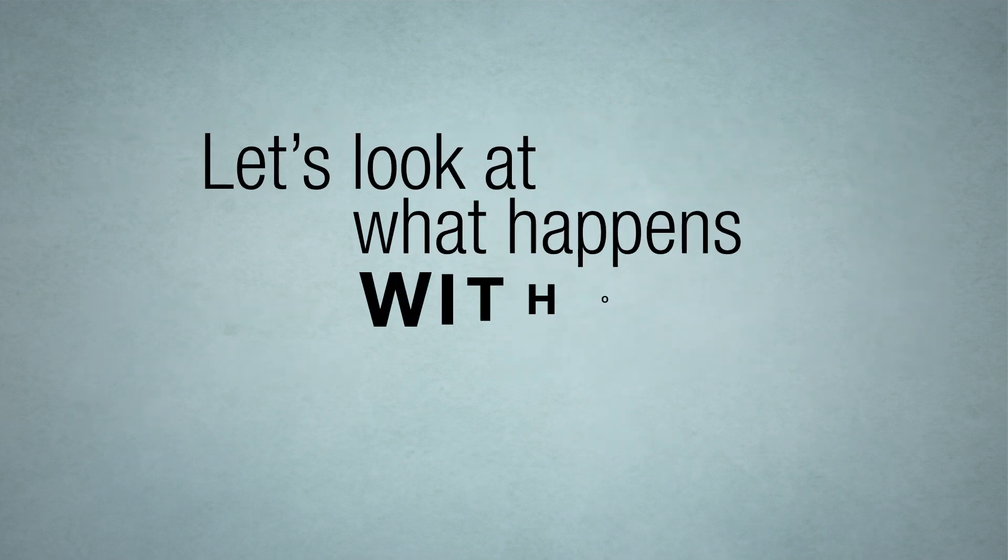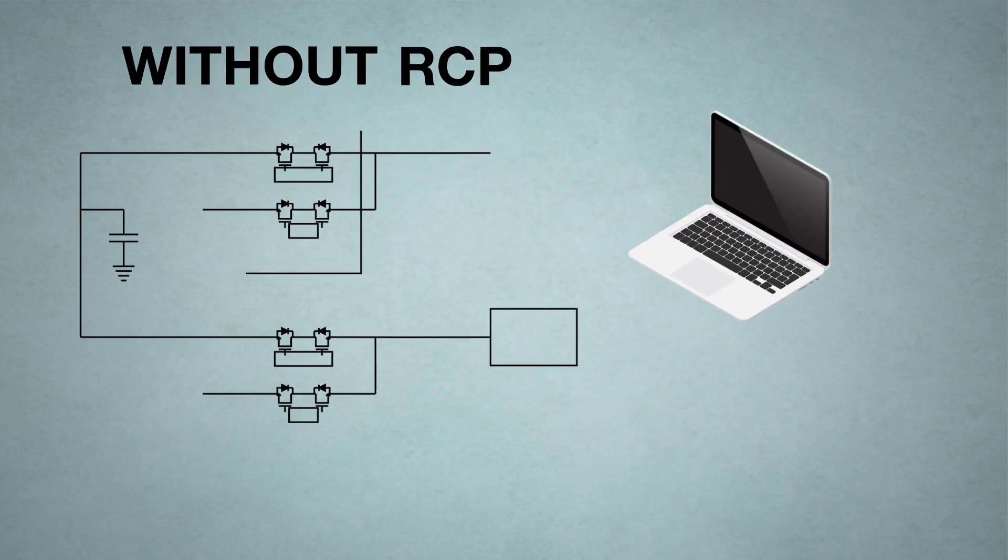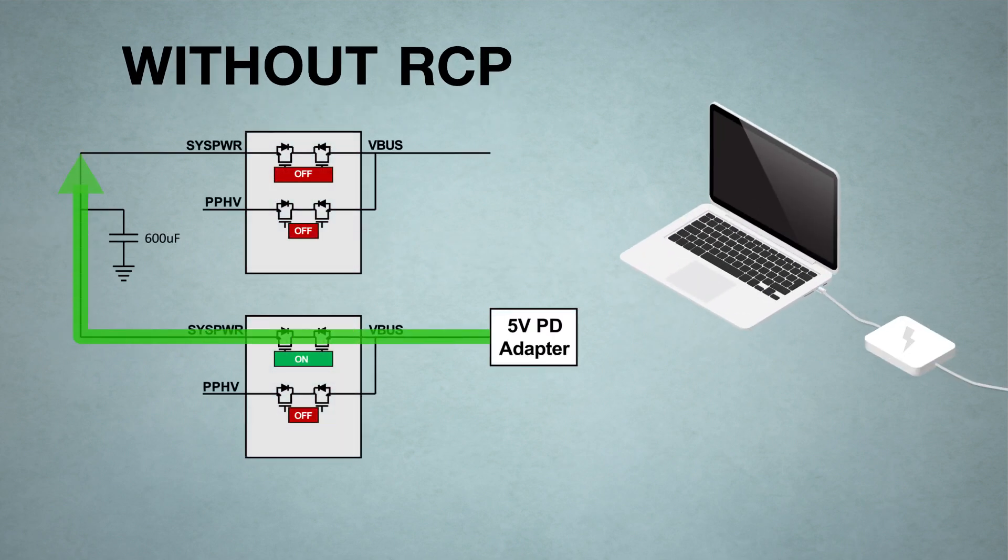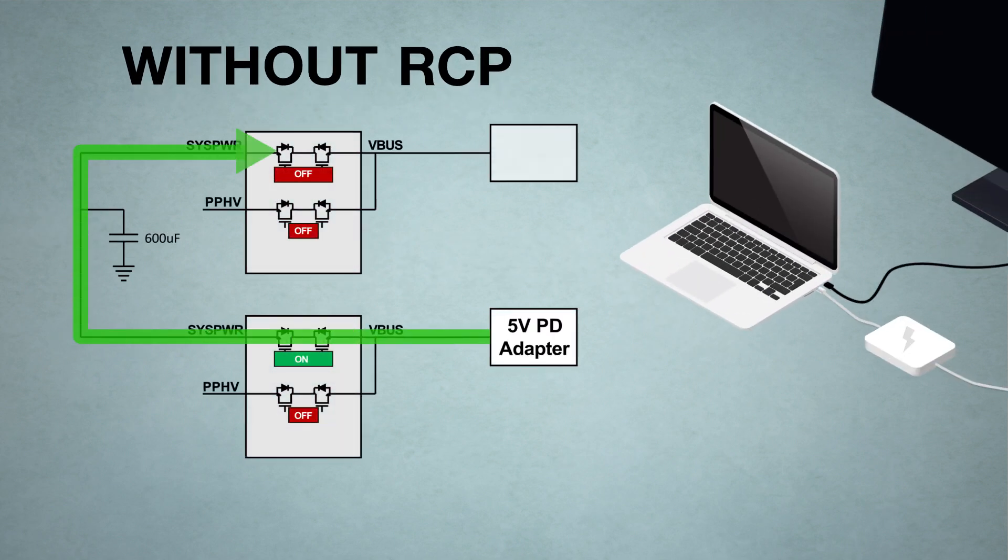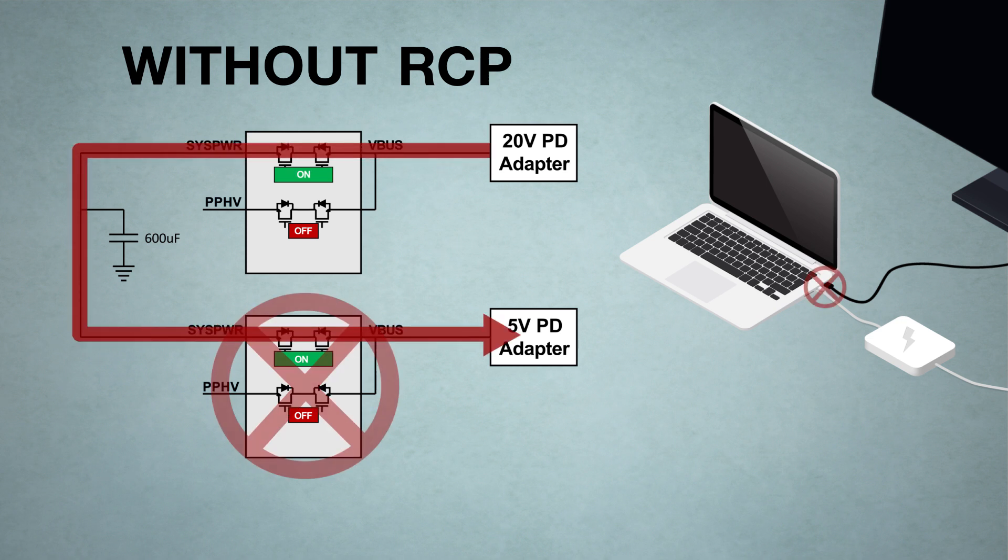Let's take a look at what happens without RCP. Plug a 5-volt adapter into one port on your device, and then plug a 20-volt adapter into another port. Current from the 20-volt adapter rushes into the system, creating a pretty big problem if it reaches the original port.